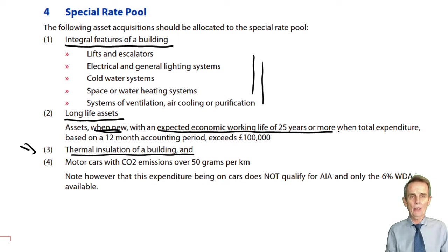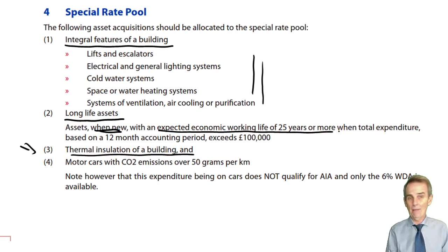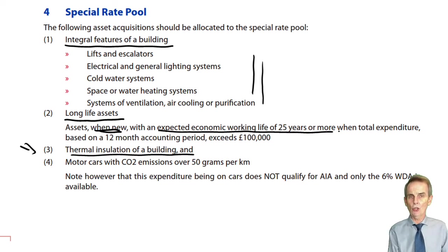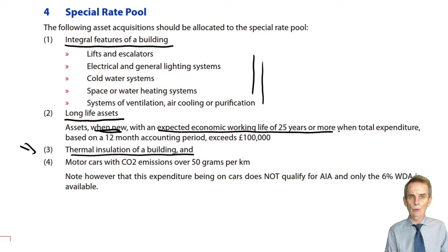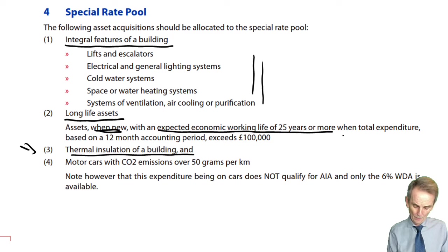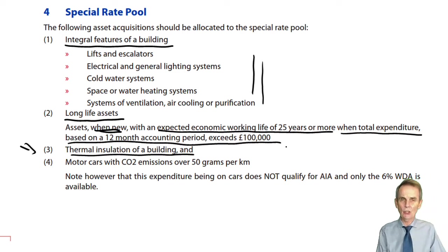A long life asset makes it special rate pool expenditure. Of course, if your total expenditure is within your £1 million AIA limit, it doesn't matter, because you get 100% in the accounting period in which you incur that expenditure. But a question would probably be set up whereby you've got a combination of expenditure that comes to more than your AIA limit, and then you would allocate the AIA firstly to this special rate pool expenditure. Those long life assets — when new, expected economic working life 25 years or more — qualify when the total expenditure based on a 12-month period exceeds £100,000.